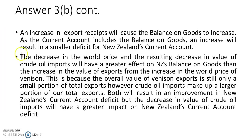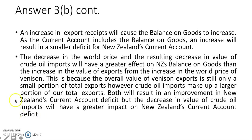Now you must make a judgment about which improvement is greater. You need some understanding of the New Zealand economy. We judge that oil is relatively more important in the New Zealand economy than venison exports - a fairly safe judgment. Both improve the current account, but the larger improvement comes from oil imports. Read the question and the answer carefully - it's complex, but in the end you're making a judgment. Make a judgment, rationalize the judgment - that's the excellence question.